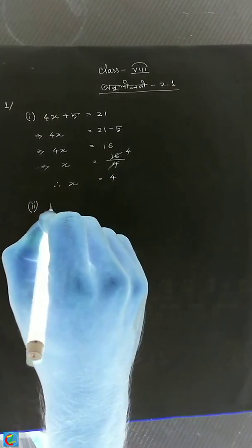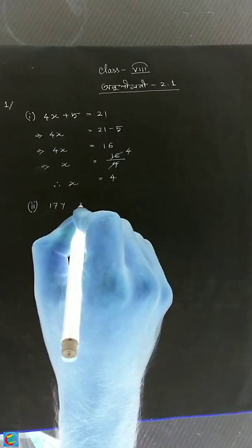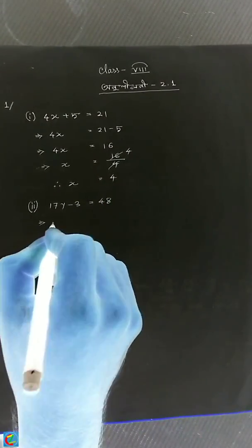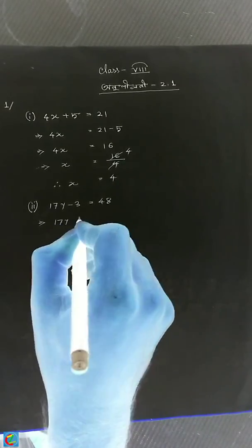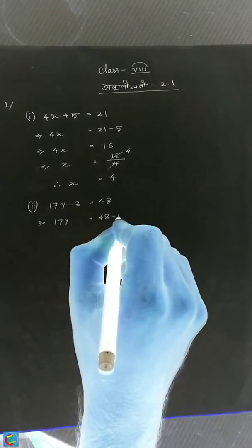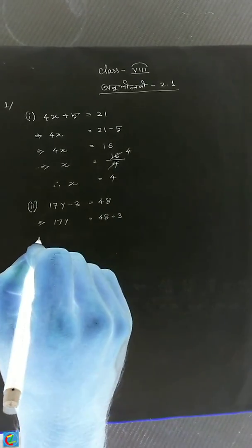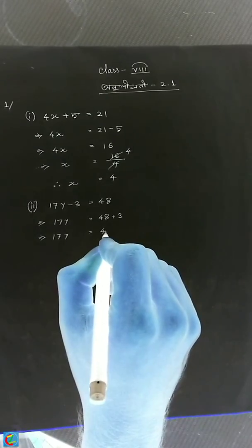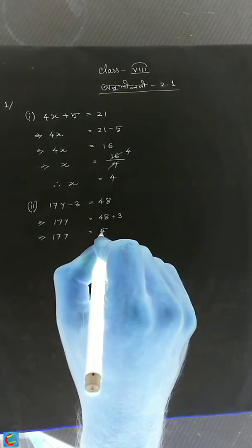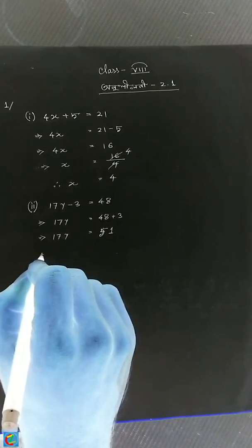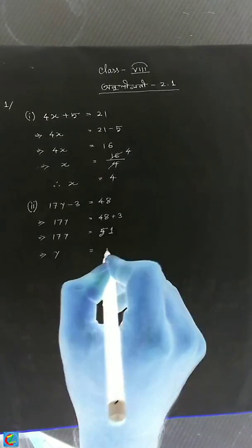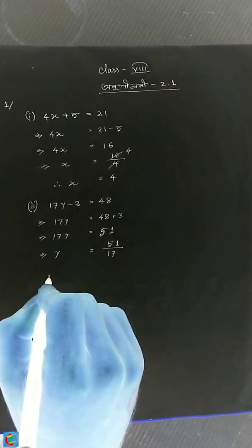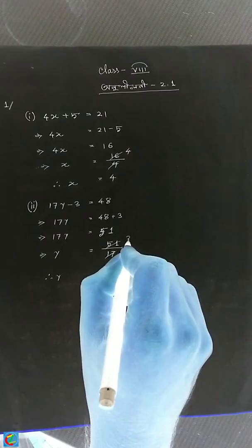Number 2 is equal to 2.1. The number is 4x. y minus 3 is equal to 48. We go to 17y is equal to 48. Minus 3, plus 3 here — this implies 17y is equal to 51. So 51 divided by 17, y is equal to 3.